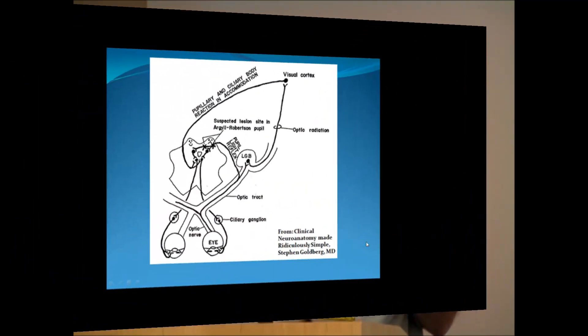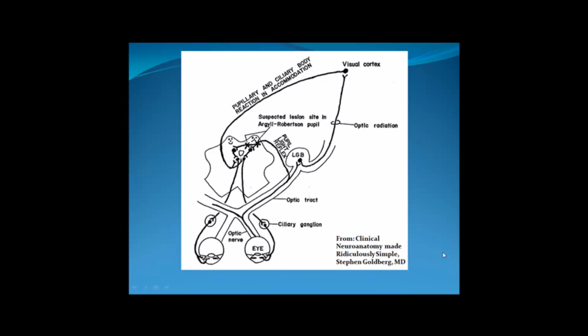Look at this diagram. This diagram represents the neural pathways responsible for the consensual light reflex. Light entering the eye stimulates the photoreceptor cells of the retina. Afferent neurons of the optic nerve carry the impulse into the brain along the optic tract through the lateral geniculate body and along the optic radiation to the visual cortex in the occipital lobe.